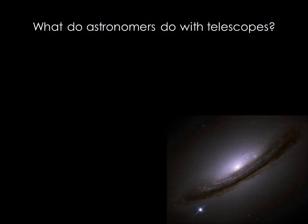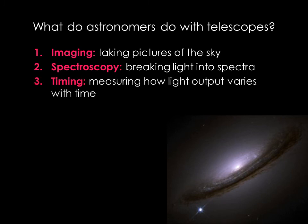You may be wondering what exactly astronomers do with these enormous telescopes. There are three basic categories of observations – imaging, spectroscopy, and time monitoring.